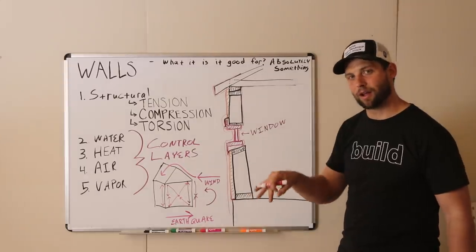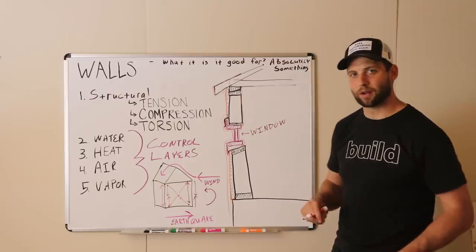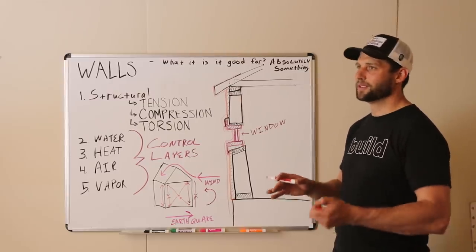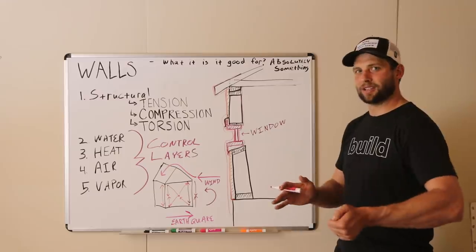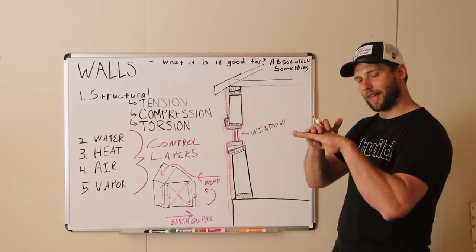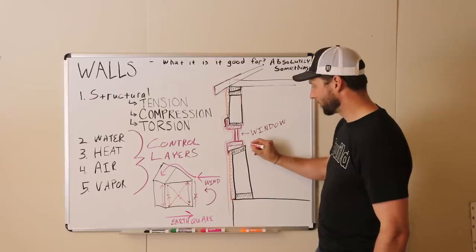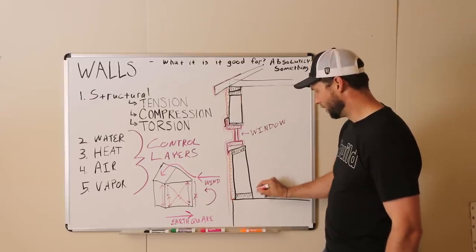We prefer caulk and a backing rod, a foam backing rod, because it expands and contracts better. A lot of people do closed cell foam and that's fine, but we just feel that as you get that expansion and contraction, there's more of a risk of foam cracking at that interface than caulk. So a backing rod with caulk over it and we come on down.